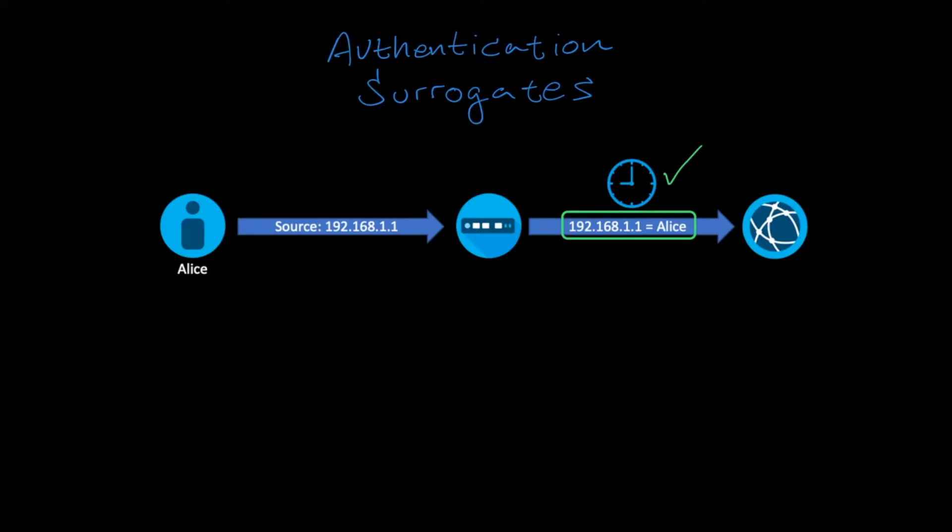For most organizations where users are assigned a specific computer and once logged in do not share access with other users, IP Address surrogates work very well.